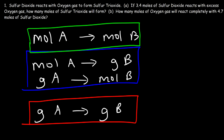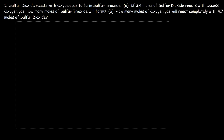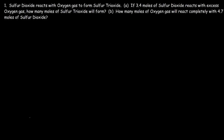Let's begin working on these problems. Number one: sulfur dioxide reacts with oxygen gas to form sulfur trioxide. If 3.4 moles of sulfur dioxide reacts with excess oxygen gas, how many moles of sulfur trioxide will form? The first thing we need to do is write a balanced chemical equation. Sulfur dioxide is SO₂, oxygen is diatomic O₂, and sulfur trioxide is SO₃.